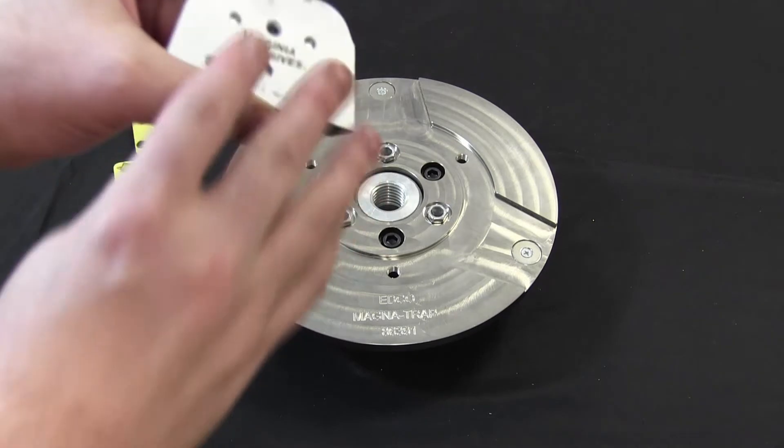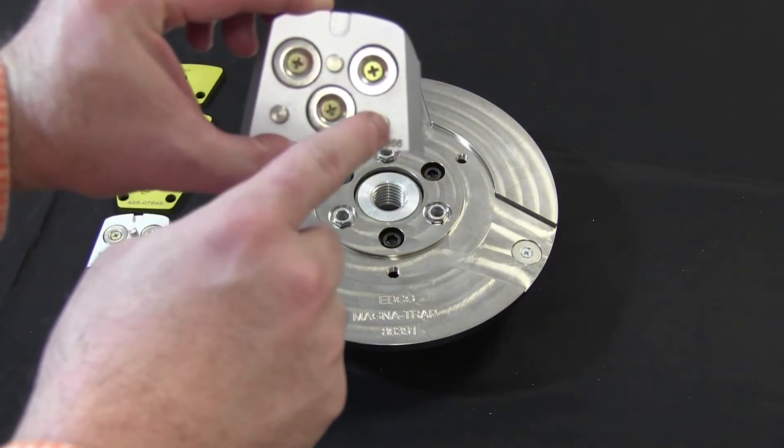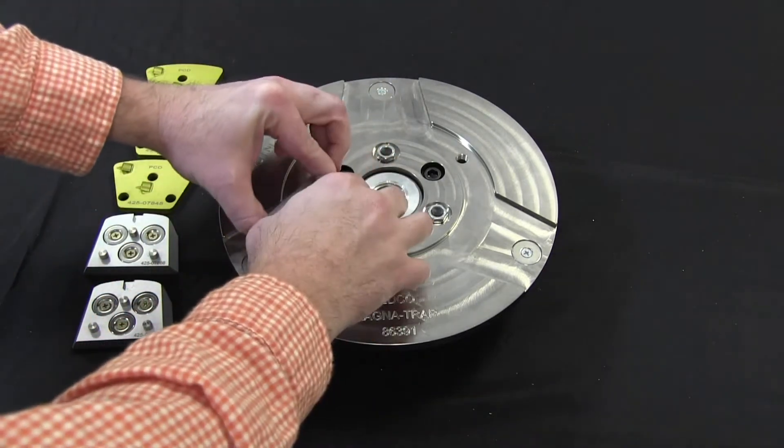First, we will apply the adapter to the disc. Before we do, notice the three pins protruding from the adapter. These will help secure the diamond trapezoids to the adapter.